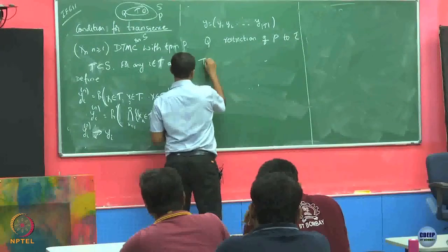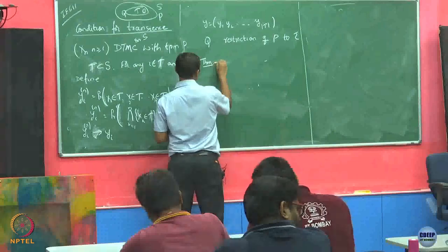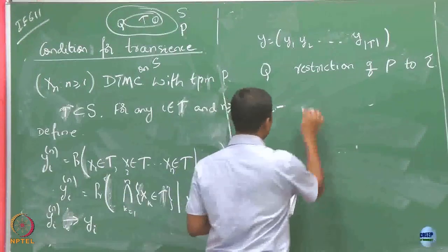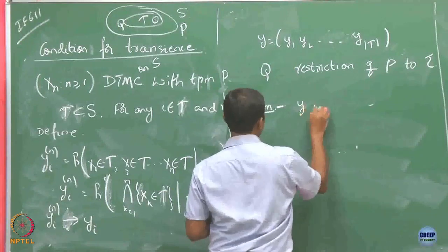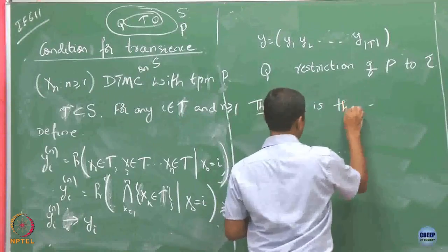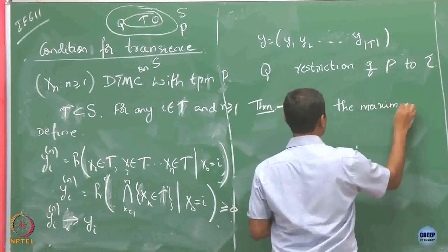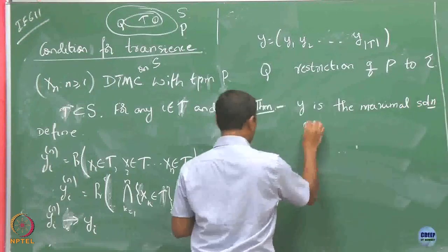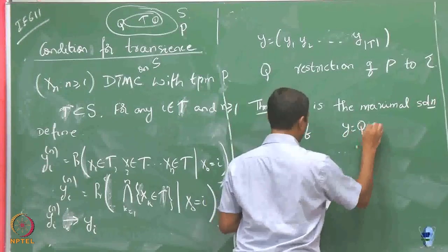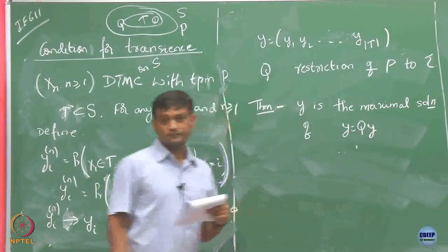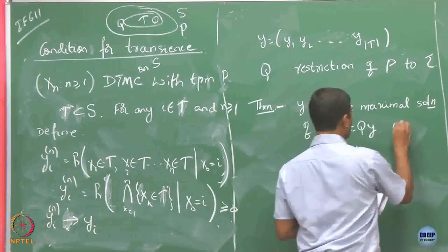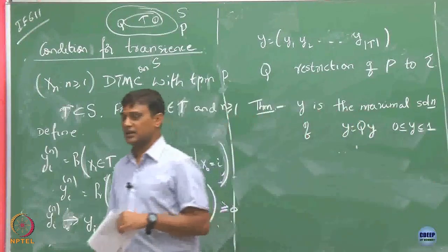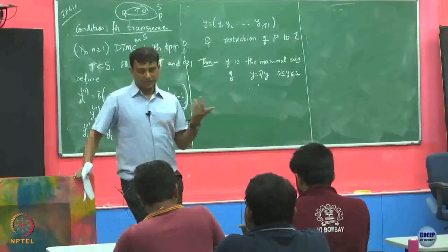We have a result which says that this Y here is the maximal solution of Y equals QY, with each element of Y between 0 and 1.